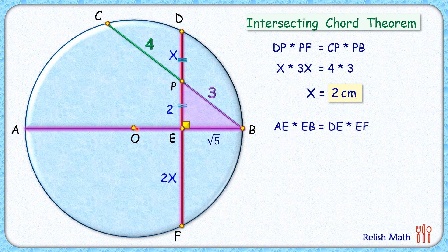Now the length AE, if the radius of the semicircle is R cm, then full length AB will be 2R, and AE length will be 2R minus root 5. So this is 2R minus root 5, and EB is root 5. DE and EF both are 2X, and X is 2 cm, so they will be 4 cm each.